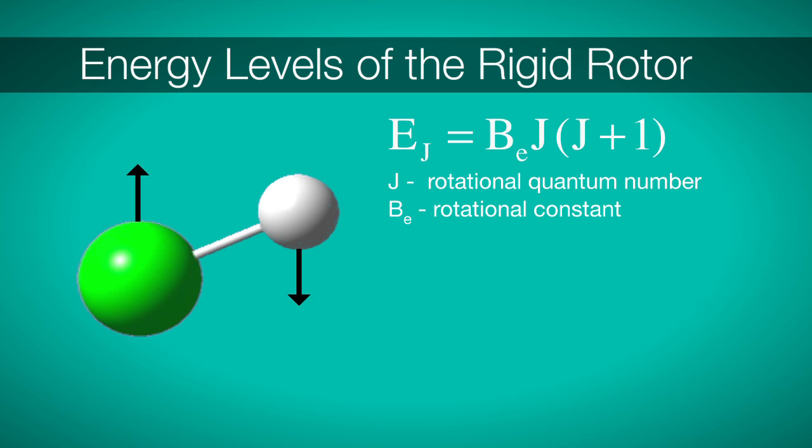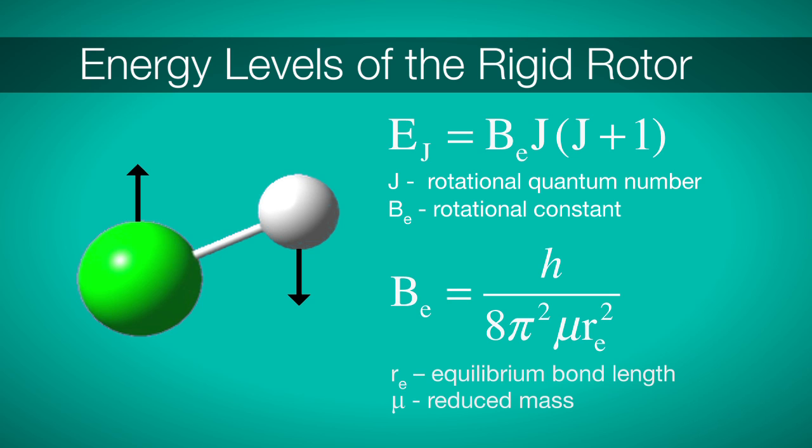Where BE is the rotational constant specific to a molecule and J is our rotational quantum number. The rotational constant contains useful structural information. In the case of diatomics, the rotational constant consists of the reduced mass, mu, and the equilibrium bond length, Re.